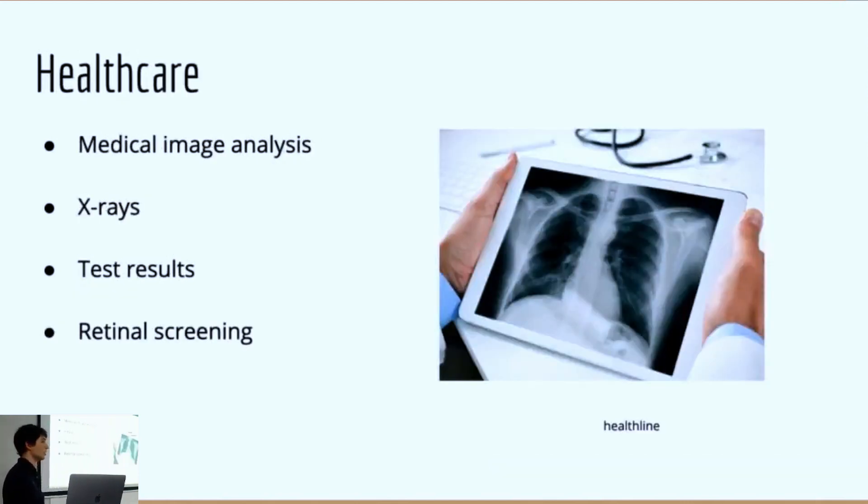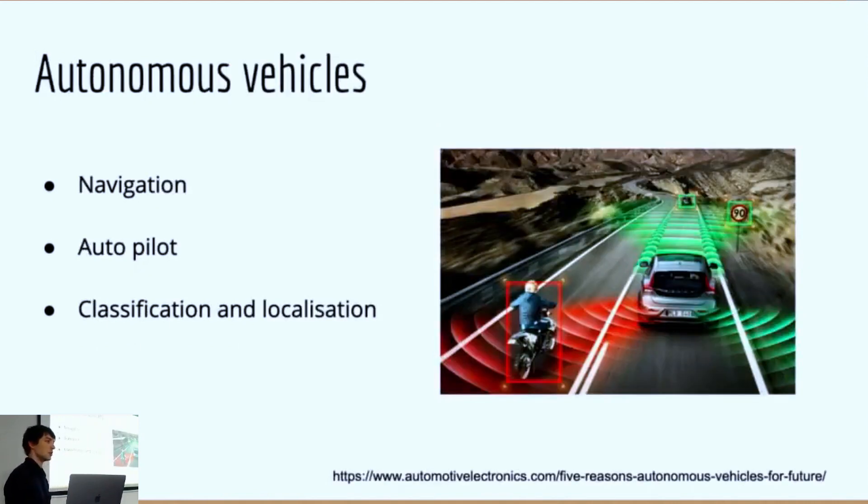Another sector where this is going to be applied quite a lot is in healthcare - analyzing test results, x-rays, feeding the images in, and being able to identify problem areas that people may miss. When you feed it into a computer, it tends to be a lot more accurate now. Autonomous vehicles are also very popular and growing at the moment. Image recognition is used for navigation and to localize and identify different hazards. When you're going down the road, your car is looking around using a camera to identify different things, using image recognition to identify hazards.